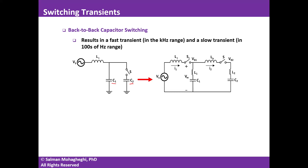Usually we switch capacitor banks on or off when the system current is at zero. This reduces a lot of current transients, but because the system is very inductive or very capacitive, when we're at the zero crossing of the current, the voltage is going to be very close to peak value — either positive peak or negative peak.